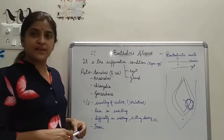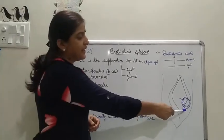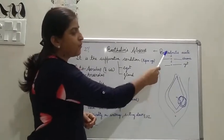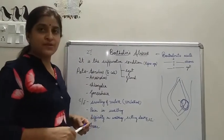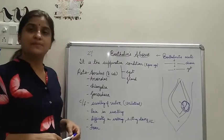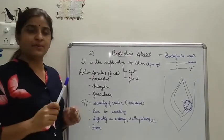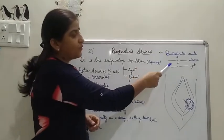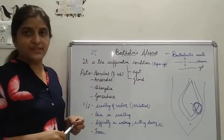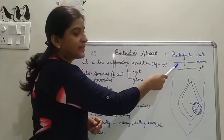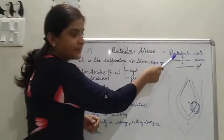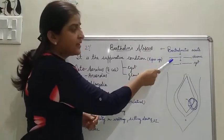While the Bartholin gland has its normal physiology, sometimes if there are certain ascending infections from the vulva, this gland may get affected. Due to this ascending infection, inflammation of the gland occurs and it presents as acute Bartholinitis with pain in the vulva.